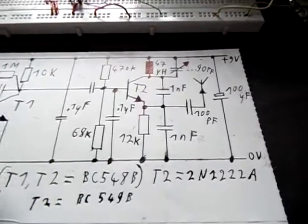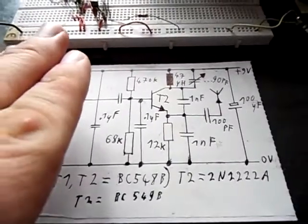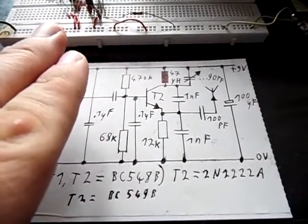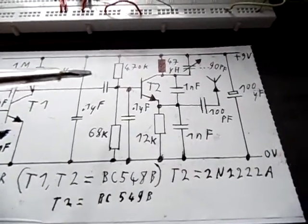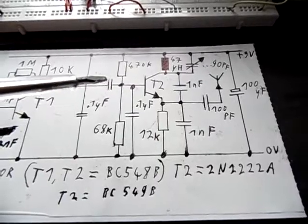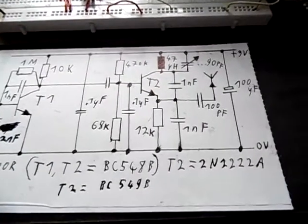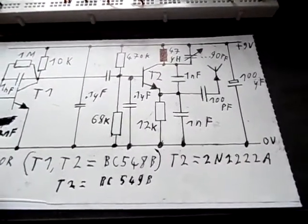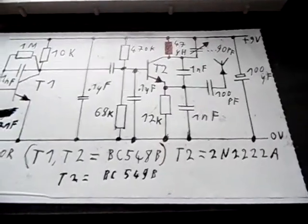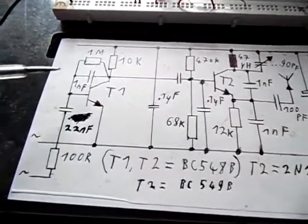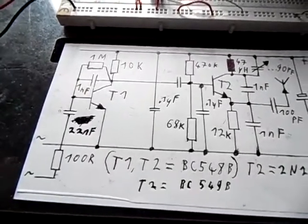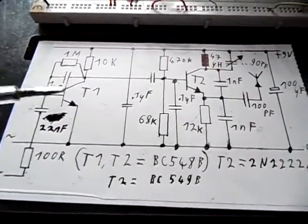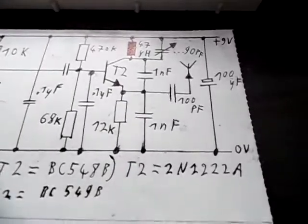In theory you could leave this stage away. This is the audio amplifier stage. You could add your audio source here on this capacitor, which is also 0.1 microfarads. But I recommend that you build this audio amplifier as well, since it also has a high frequency cutoff filter in here and makes a better signal.